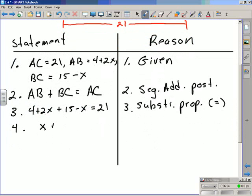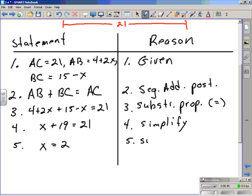So what I do here is I go 2x minus x to give me x, 4 plus 15 to give 19 and bring down the 21 and that would be the justification or the reason there is I simplified the equation. Statement number 5 is simply going to be x is equal to 2 and what allowed us to do that is the subtraction property of equality.